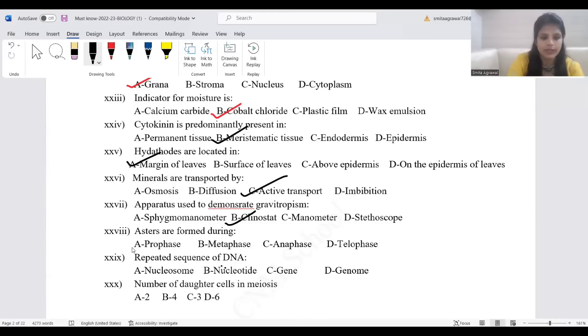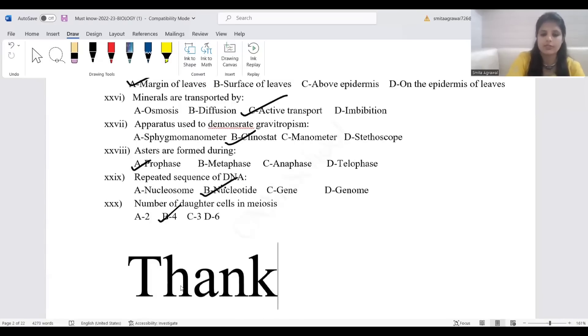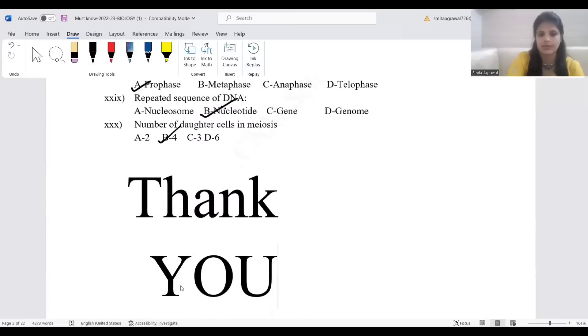Asters are formed during prophase. Repeated sequence of DNA is nucleotide. Number of daughter cells in meiosis are 4. In mitosis, the number of cells formed are 2. So with this, thank you so much. In the next video we are going to discuss diagram-based questions. Till then, take care, goodbye.